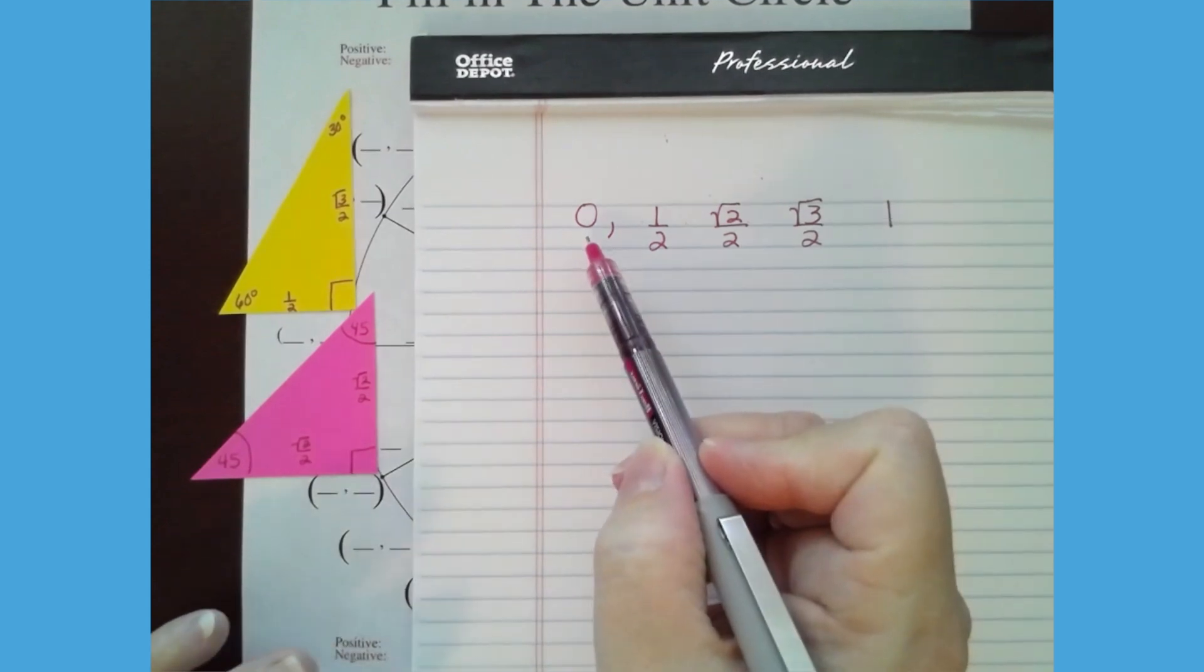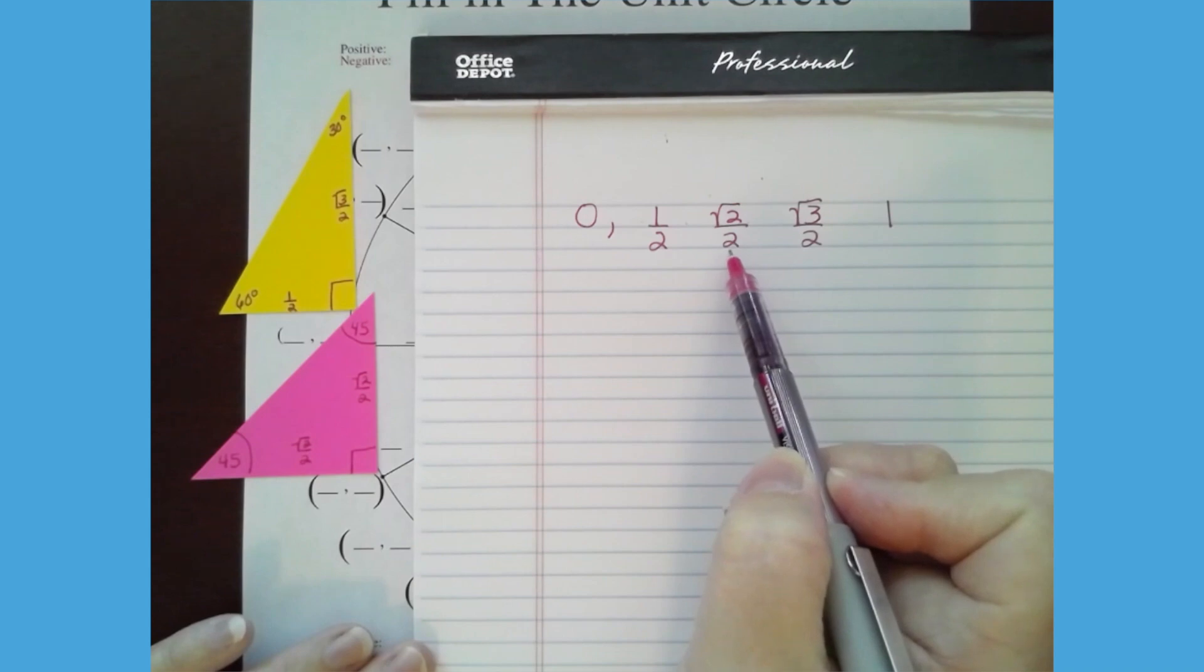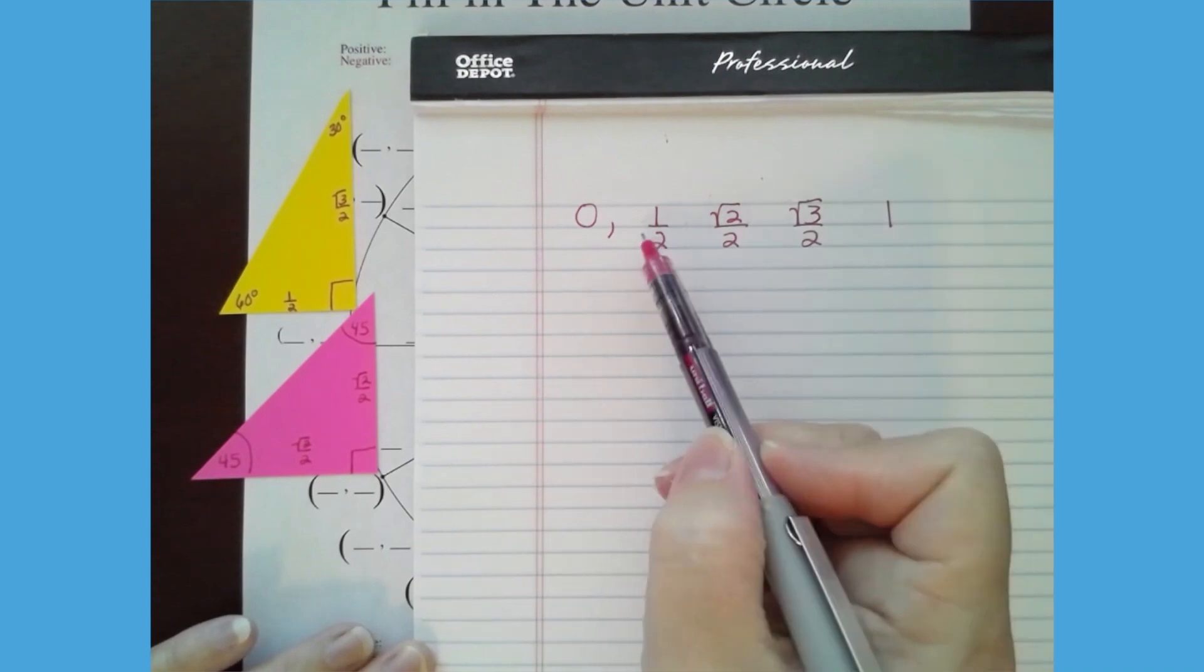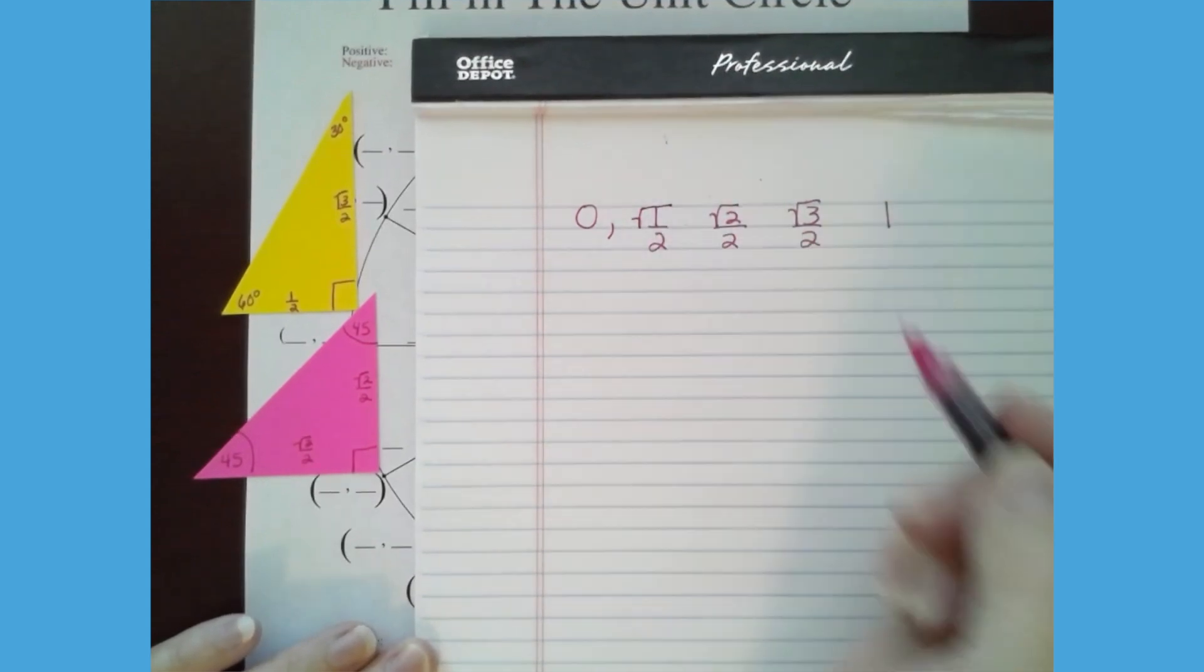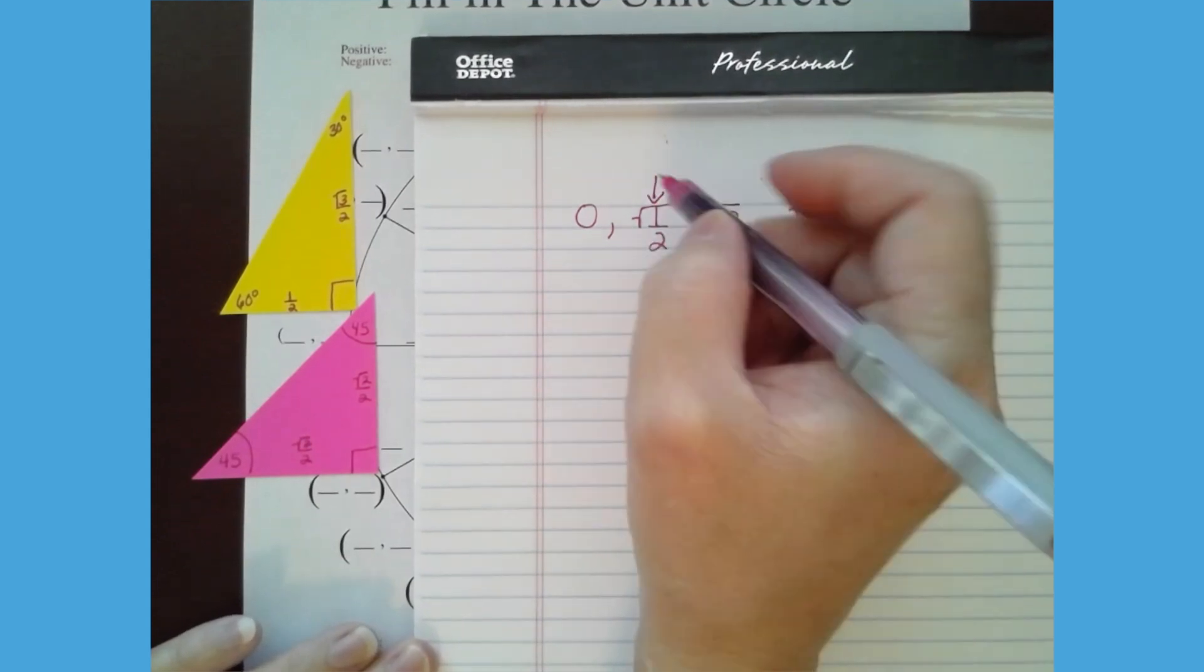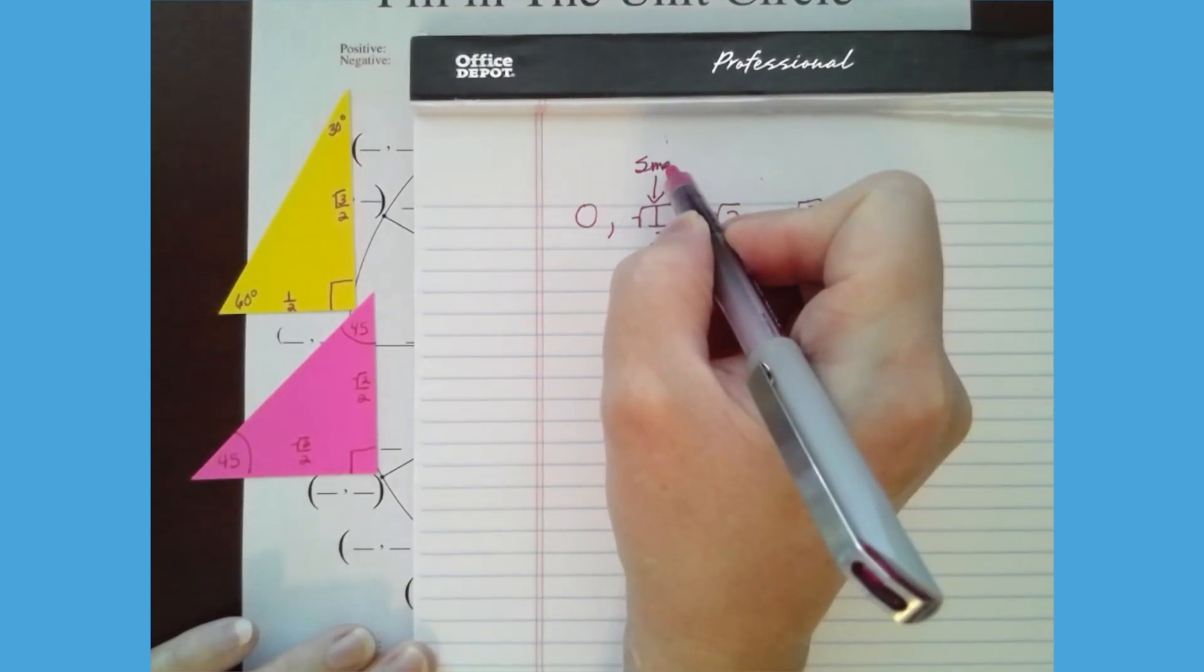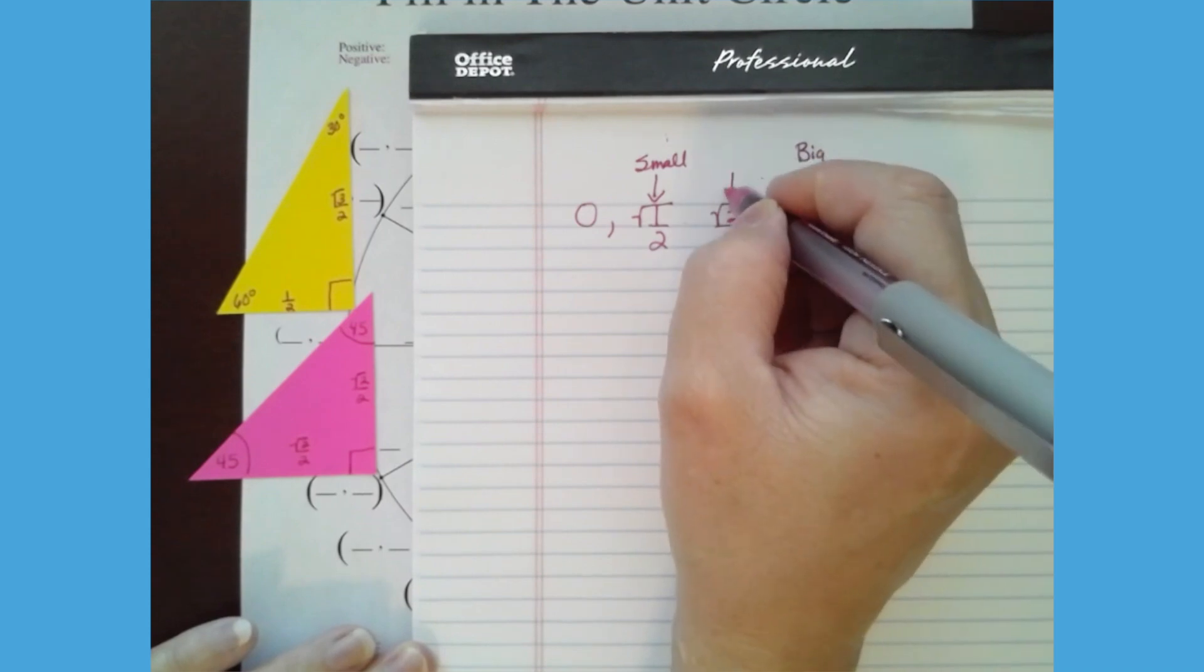So let's talk about the order of these. So zero, we know is very small. One half. How do I know that one half is smaller than square root of two over two? Well, all of these denominators are two. And I could really think of this as the, if I wanted to get crazy, I can think about that as a square root of one. So I know that this is a small value and that this is a big value, a bigger value, and that this is somewhere in between.